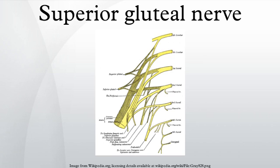The superior gluteal nerve is a nerve that originates in the pelvis and supplies the gluteus medius, the gluteus minimus, and the tensor fasciae latae muscles.